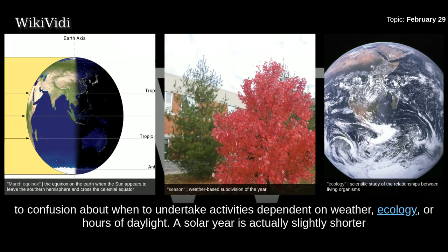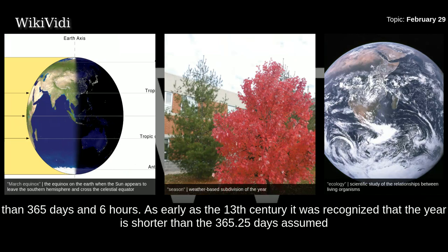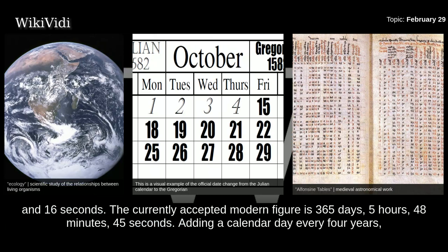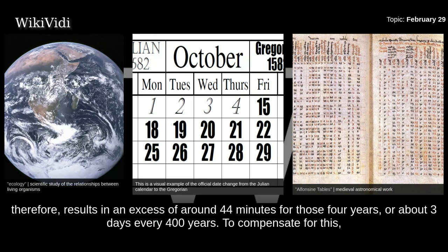A solar year is actually slightly shorter than 365 days and 6 hours. As early as the 13th century it was recognized that the year is shorter than the 365.25 days assumed by the Julian calendar. The Earth's orbital period around the sun was derived from the medieval Alphonsini tables as 365 days, 5 hours, 49 minutes, and 16 seconds. The currently accepted modern figure is 365 days, 5 hours, 48 minutes, 45 seconds. Adding a calendar day every 4 years therefore results in an excess of around 44 minutes for those 4 years, or about 3 days every 400 years.